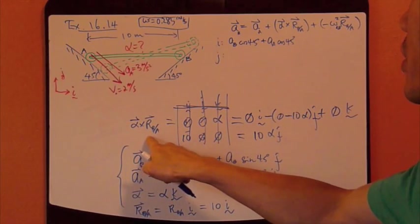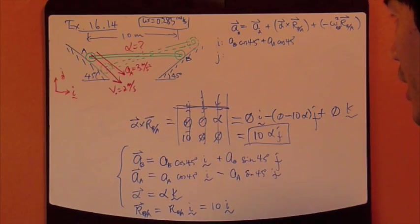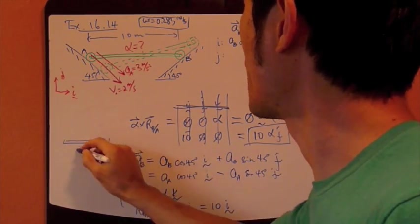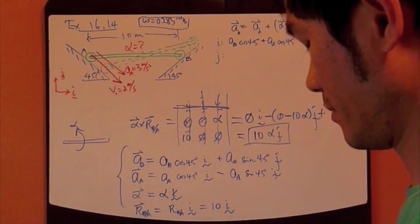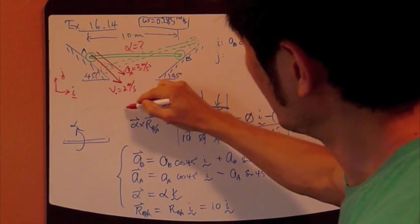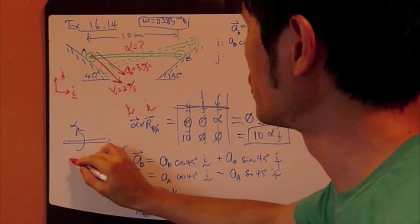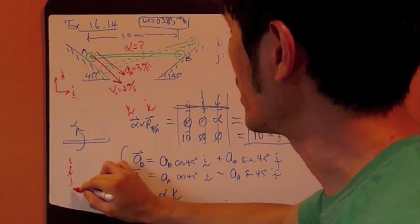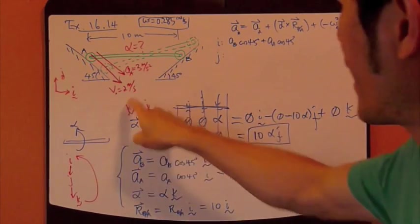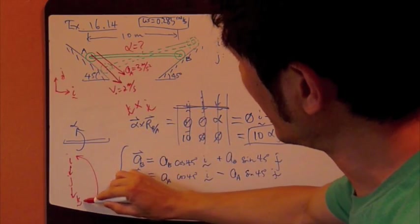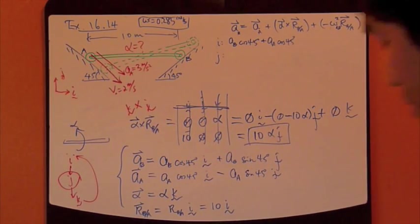So alpha crossed with this R gives you J component. And, and look at it, if it makes sense. Alpha is here, and it's in this positive K direction. So alpha is in the positive K, and R is in the I direction. So right-hand rule says that I, J, go with K this way, and then, and back to this way. So K cross it with I. K cross it with I gives you positive J. So, that's correct.